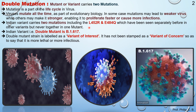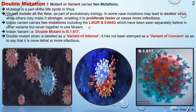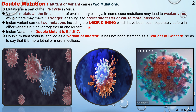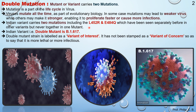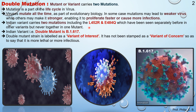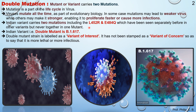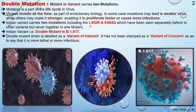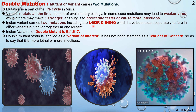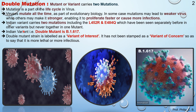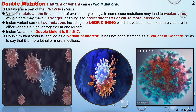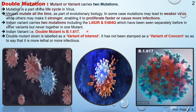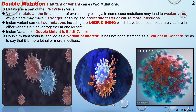The first individual mutations were seen as far back as March 2020, where the cause of infection occurred individually. But now, presently, both these different strains have been seen together, forming the Indian variant or double mutant, called B.1.617.